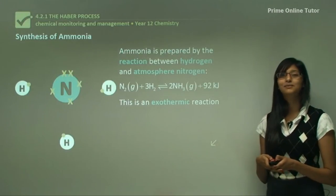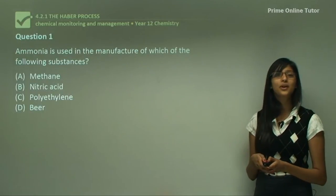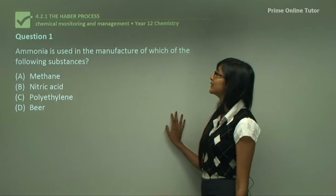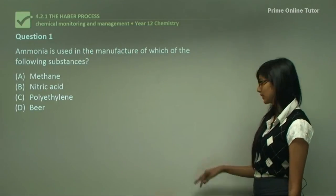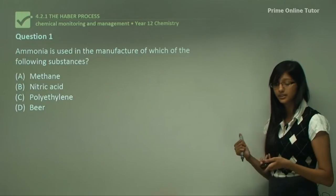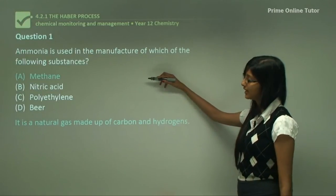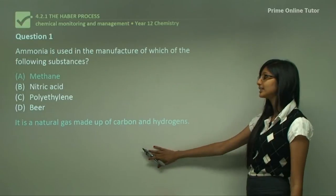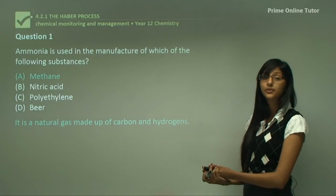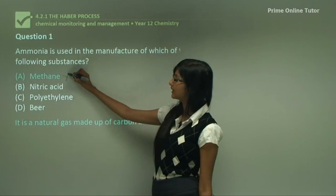Now let's look at some questions to test your knowledge. Question 1 asks: ammonia is used in the manufacture of which of the following substances? Let's look at the list of substances provided. First, methane — methane is a natural gas made up of carbon and hydrogen, so ammonia is not involved as a reactant in this process, hence it's not answer A.